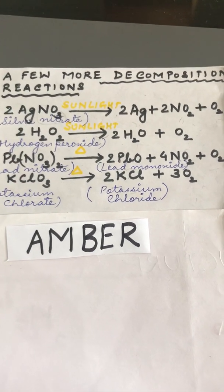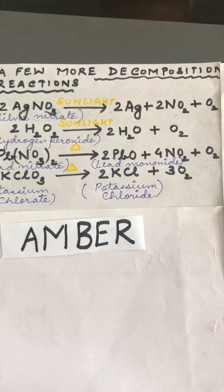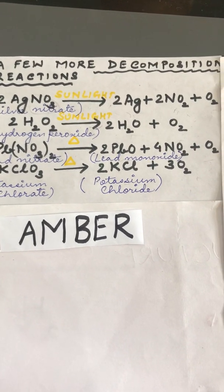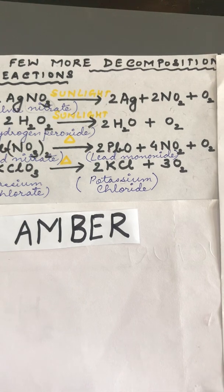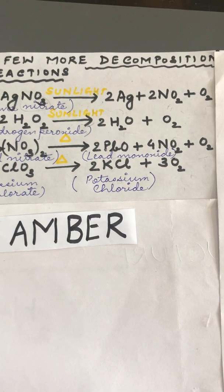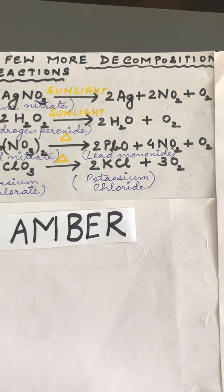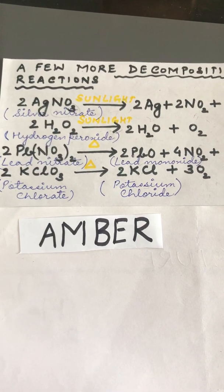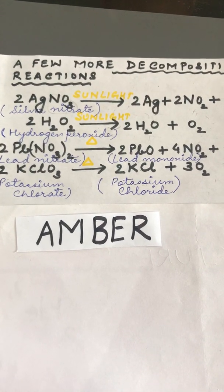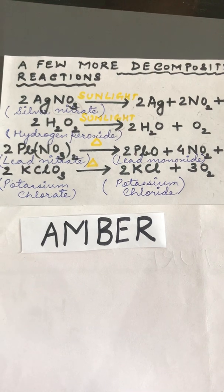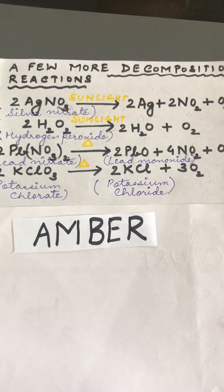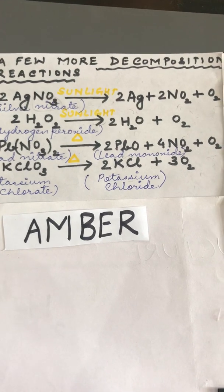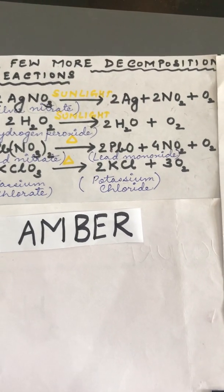So when lead nitrate is heated, the observation is: a white colored solid changes to a yellow colored solid PbO, with evolution of reddish brown fumes of nitrogen dioxide and the colorless odorless gas oxygen. Finally, potassium chlorate on being heated forms potassium chloride and oxygen. I hope you have understood today's topic on decomposition reactions. In our next class, we will discuss displacement reactions. Thank you.